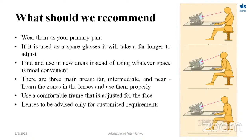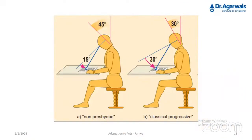Recommendations for the patient: wear progressive lenses as your primary glasses, as using them as spare glasses will take far longer to adjust. Find and use the new areas — far, intermediate, and near — instead of the usual workspace. Ask the patient to learn the three zones and use them properly. Use a comfortable frame adjusted for the face, and advise lenses only for customized requirements.